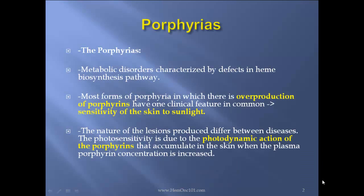The porphyrias are metabolic disorders characterized by defects in the heme biosynthesis pathway. Most forms of porphyria in which there is overproduction of porphyrins have one clinical feature in common: sensitivity of the skin to sunlight. The nature of the lesions produced differ between diseases. The photosensitivity is due to the photodynamic action of the porphyrins that accumulate in the skin when the plasma porphyrin concentration is increased.